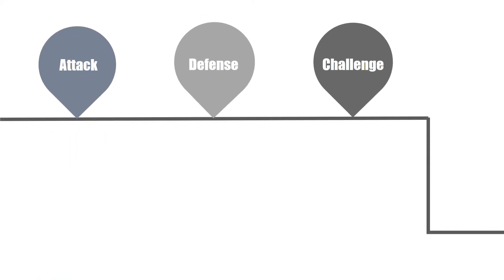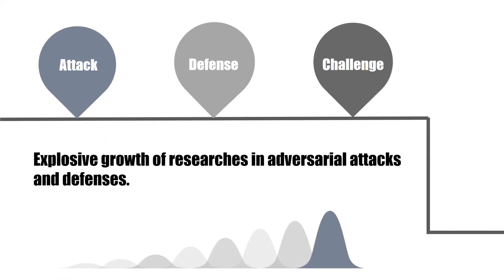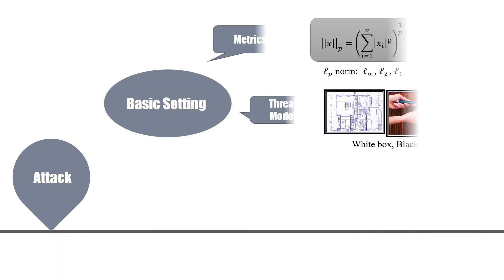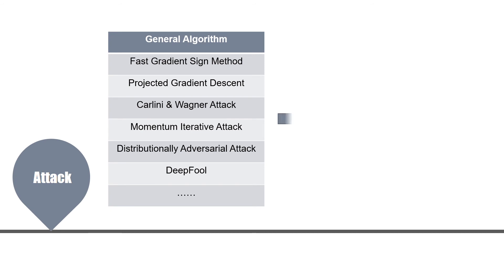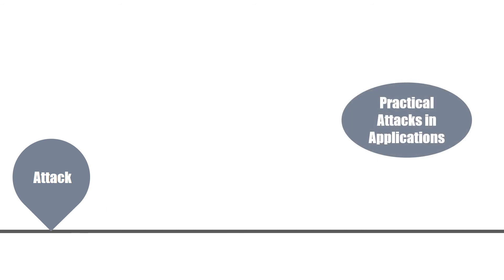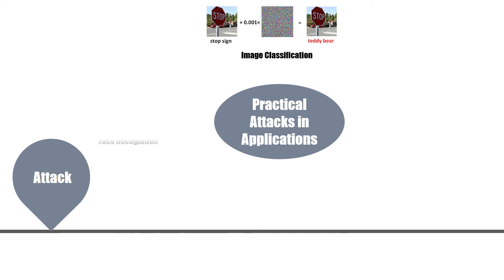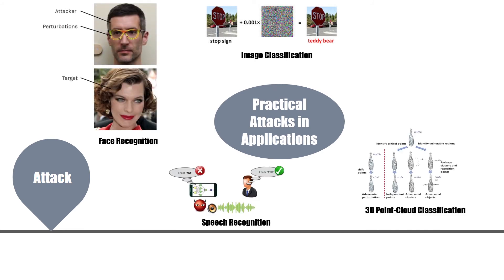A large number of researches have emerged in this field in recent years. We summarize the existing researches and discuss the research situation and direction for future work. First, the research starts from the theoretical basis of the adversarial attack, including the basic concepts and attack settings. Then the general attack algorithms are fully described. Finally, the practical application cases of adversarial attacks in different fields are listed. Through this part, readers can quickly understand the theory of adversarial attacks and its security threats in practical applications.